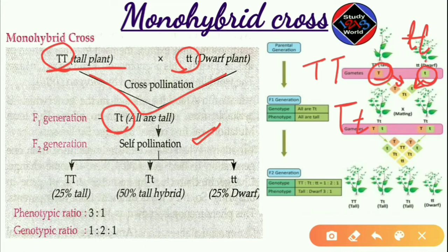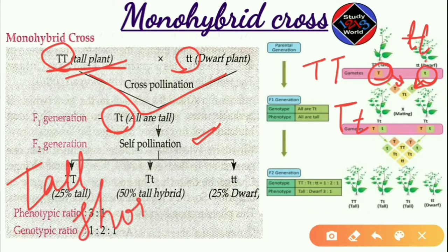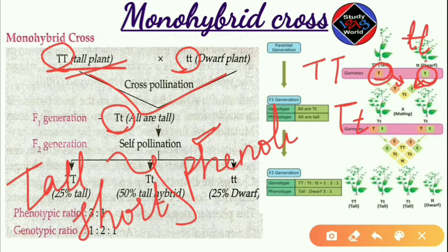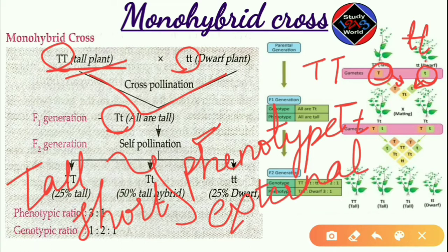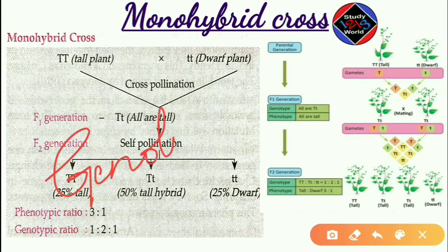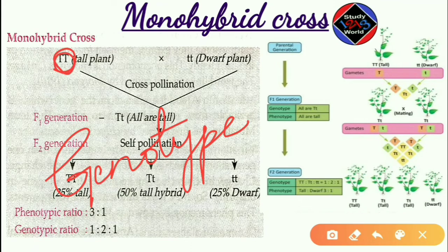Now let's talk about phenotype and genotype. The characters tall or dwarf are called phenotype — phenotype is the external appearance. Genotype means the genetic makeup of an individual, that is what genes the organism is made up of. The genotypes here are capital T capital T, small t small t, and capital T small t respectively.